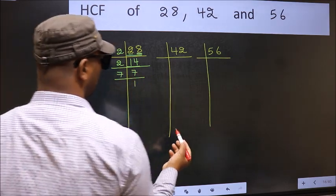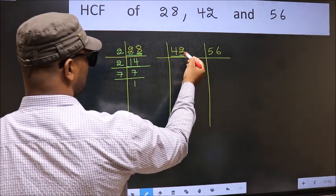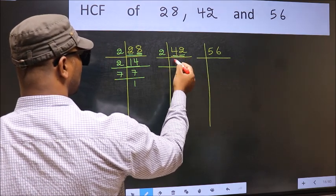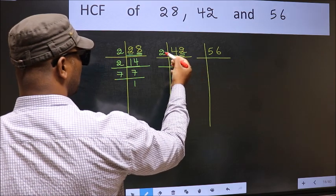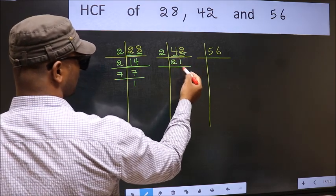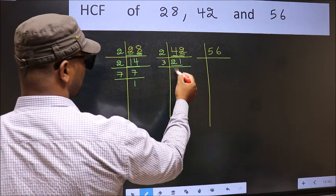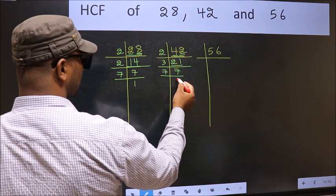Now, the other number 42. Last digit 2, even, so take 2. First number 4, when do we get 4 in the 2 table? 2 times 2 is 4. The other number 2, when do we get 2 in the 2 table? 2 times 1 is 2. Now, 21 is 3 times 7 is 21. Now, 7 is a prime number, so 7 times 1 is 7.